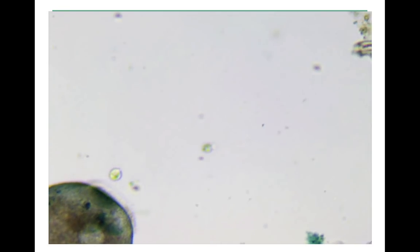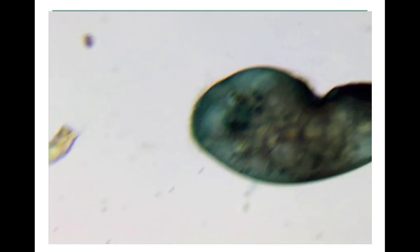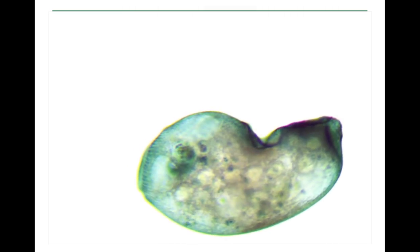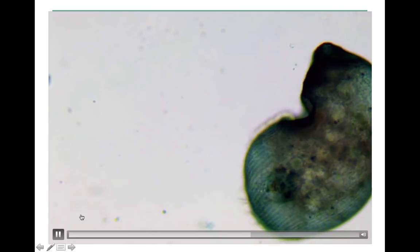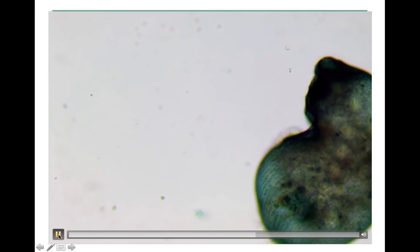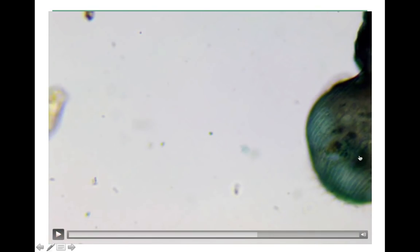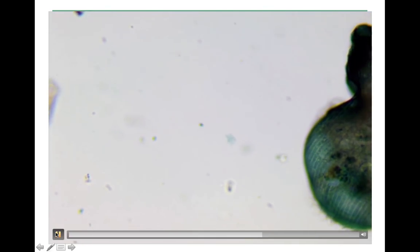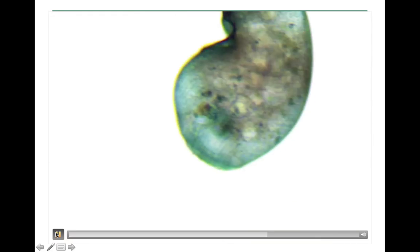Say bye to that one. Here's another one. You can see the membranelle again, and here you can see these rows of lines — the striation. That's the pellicle, the little skin that helps the ciliate give its body some structure.